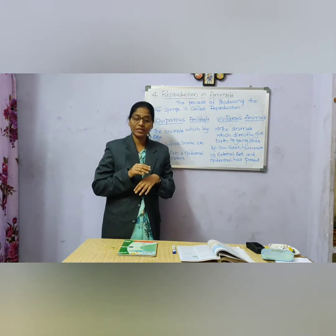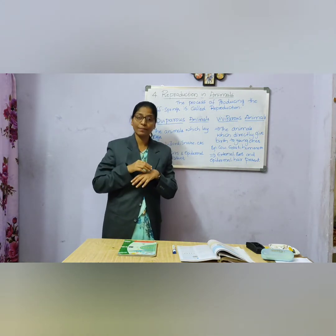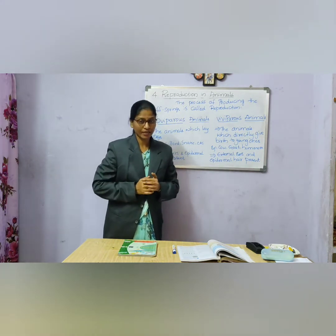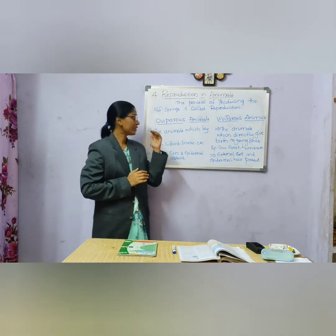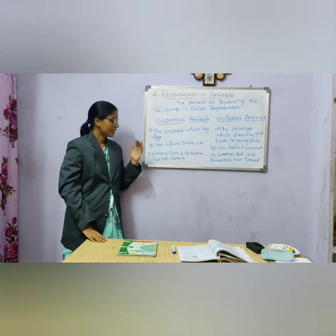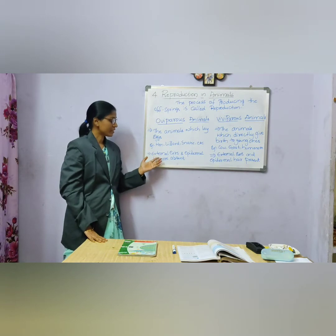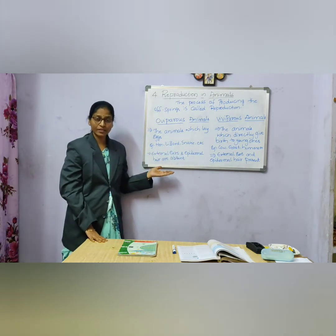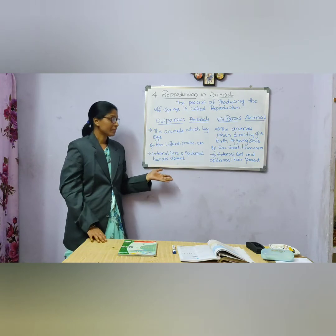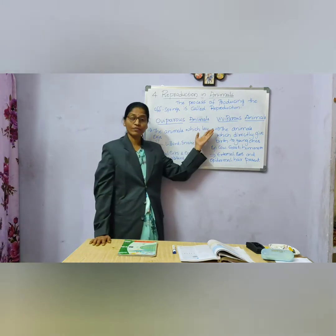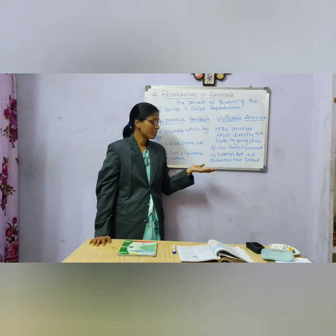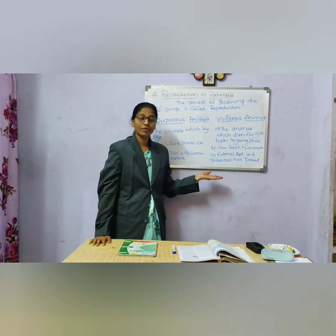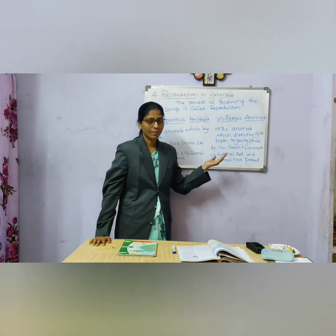If external ears and epidermal hair are present, then it is a viviparous animal. In oviparous animals, external ears and epidermal hair are absent. In the case of viviparous animals, external ears and epidermal hair are present.